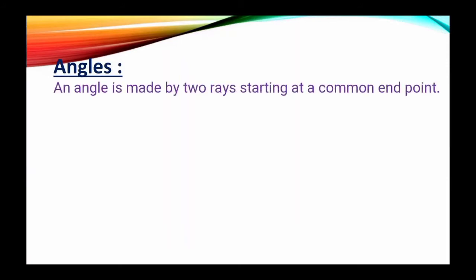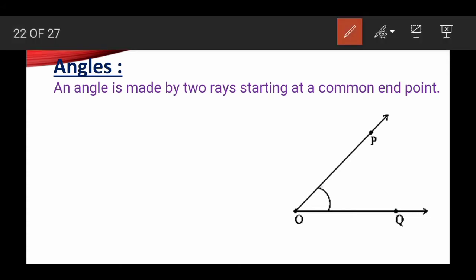Angles. An angle is made by two rays starting at a common end point. Look at here, it is made by two rays OP and OQ, and the gap between these two is known as angle. This gap is known as angle.